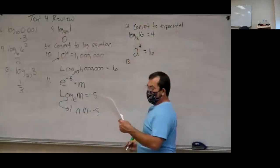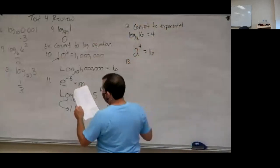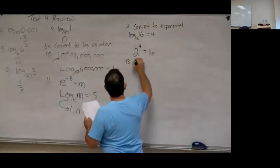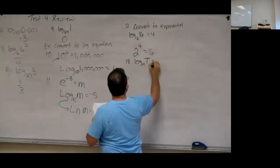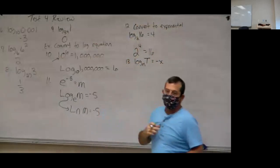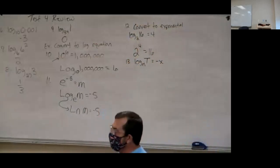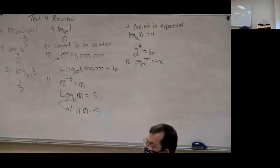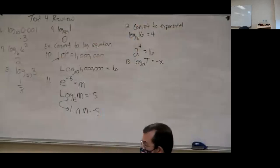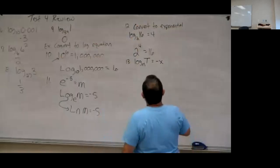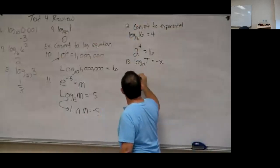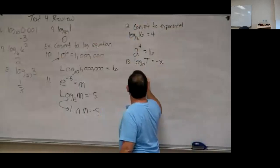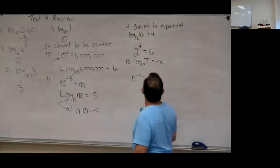We'll also have one with all letters. Log base n of t equals negative x. Remember, if the problem gives you capital letters, use capital letters in your answer — the system is picky about that. My base is n, so bring down the n. The exponent is negative x. So n to the negative x equals t.